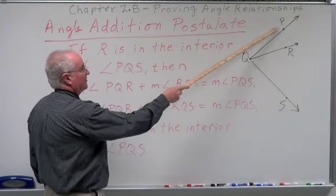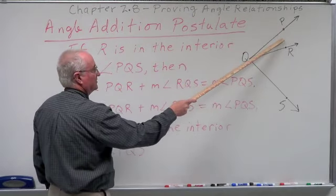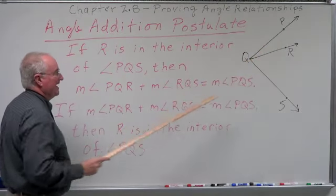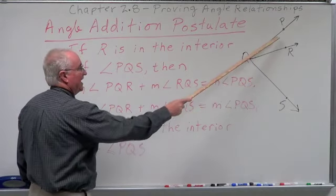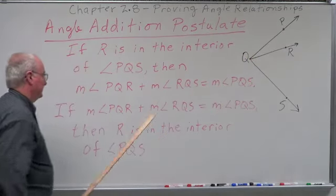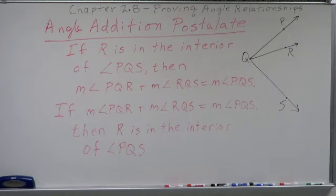So I can take the measurement of angle PQR, this piece in here, and add it to the measurement of angle RQS, this piece here, and I should get the large angle. And the converse is also true.